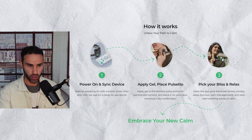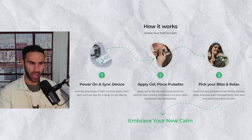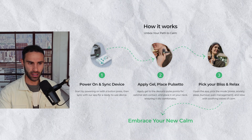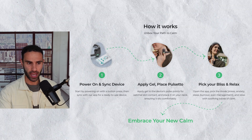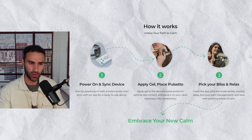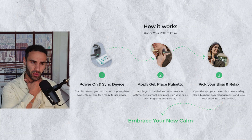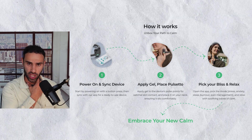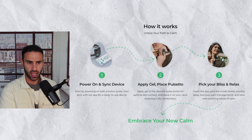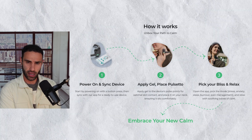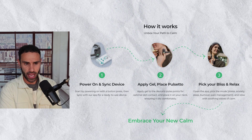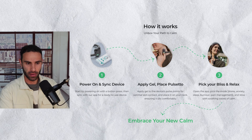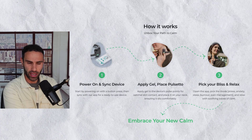Here's how the Pulsetto works. First, power on the device and sync it with the app — it's then ready to use. Apply a small amount of gel and place the Pulsetto on the optimal points on your neck, ensuring it sits comfortably. Then open the app and pick your mode: stress, anxiety, sleep, burnout, or pain management, and relax with soothing waves of calm. Most people notice effects within four to five minutes.